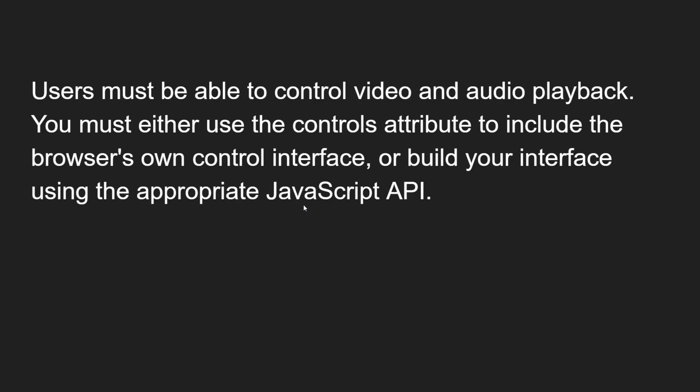Users must be able to control video and audio playback — things like pause, play, forward, and rewind. You can either use the controls attribute to include the browser's own control interface, which will automatically appear when you add this boolean attribute, or you can build your own interface using the appropriate JavaScript API, as introduced with HTML5 video and audio elements.